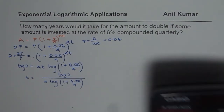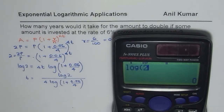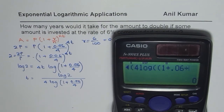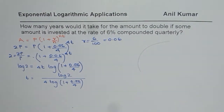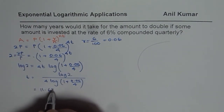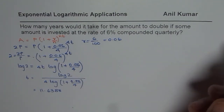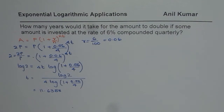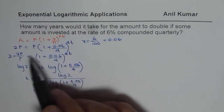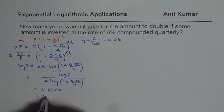At this stage we use the calculator to figure out the answer: log of 2 divided by, in brackets, 4 times log of 1 plus 0.06 divided by 4, bracket close — this equals 11.6388. So time equals 11.6388. Rounding to one decimal place, we get 11.6. So approximately 11.6 years is the duration in which, at the rate of 6% compounded quarterly, the amount can be doubled.